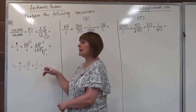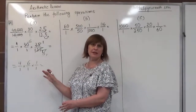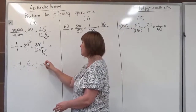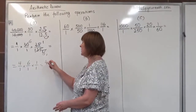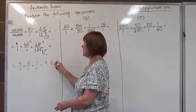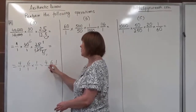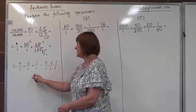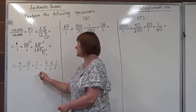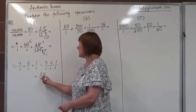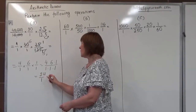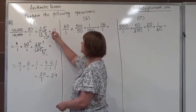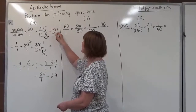We multiply common fractions across, so we multiply all the numerators: 4 times 6 times 1 over 1 times 1 times 1, which gives us 24 over 1, or 24. So the final answer for problem A is 24.